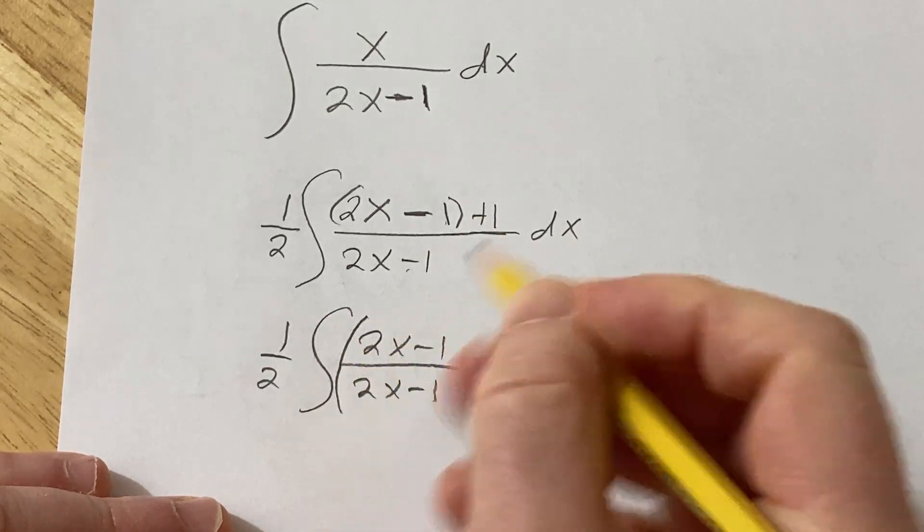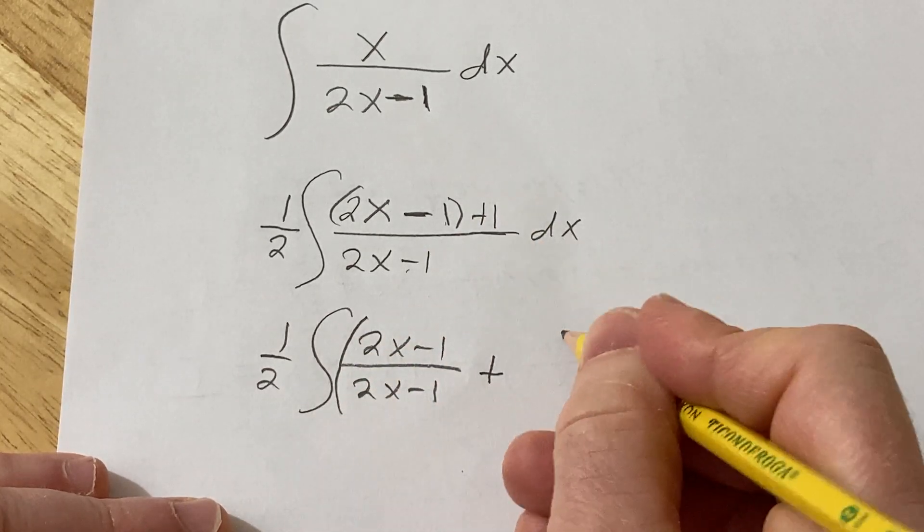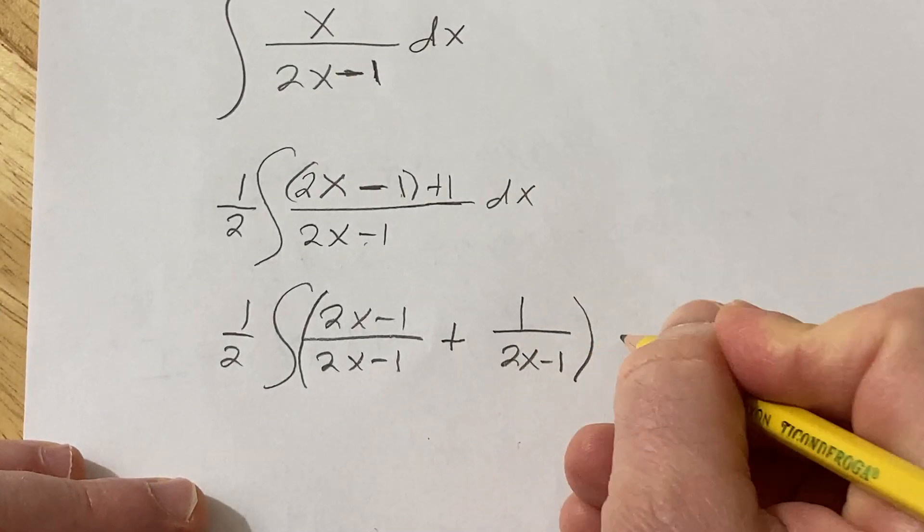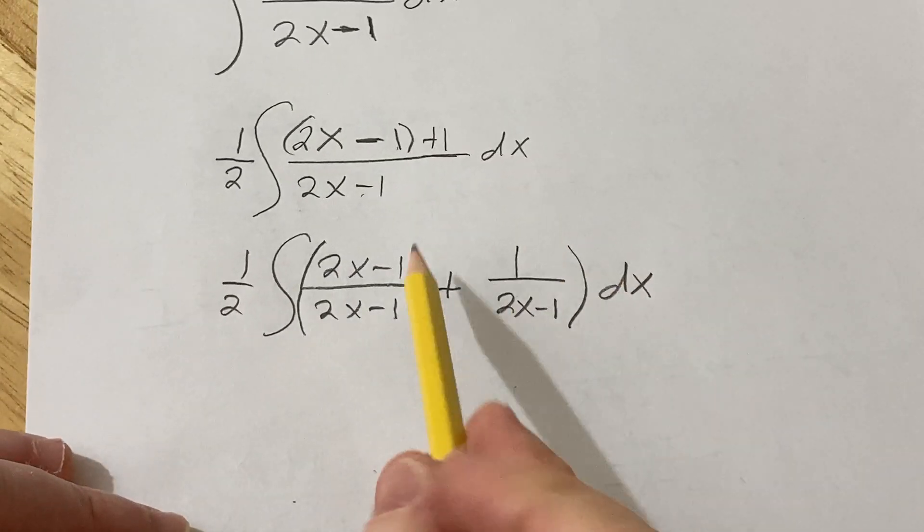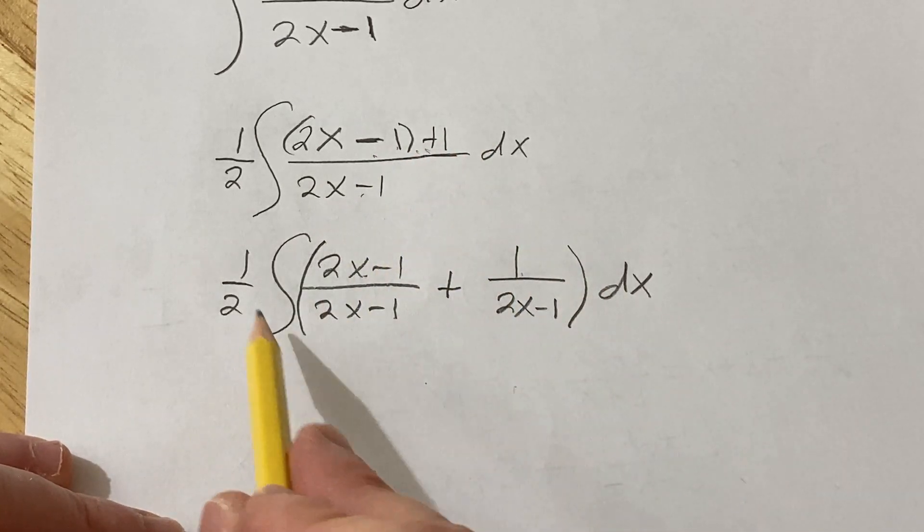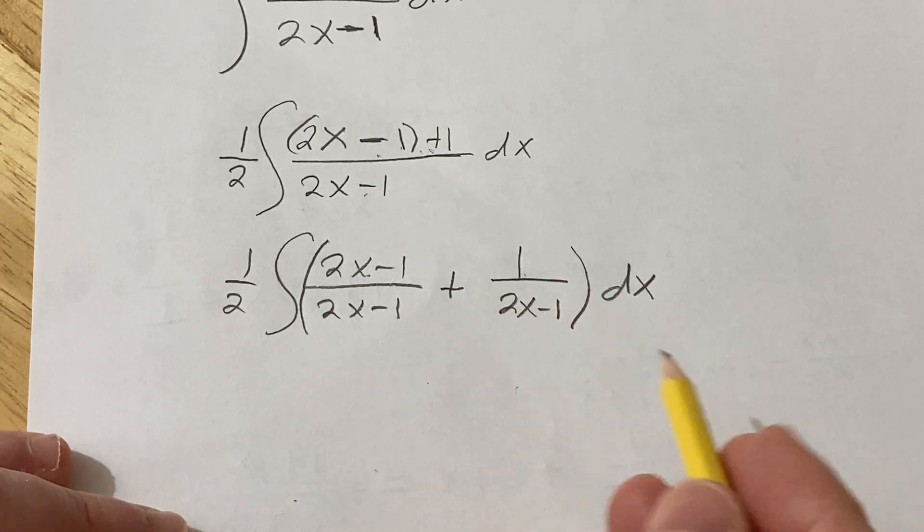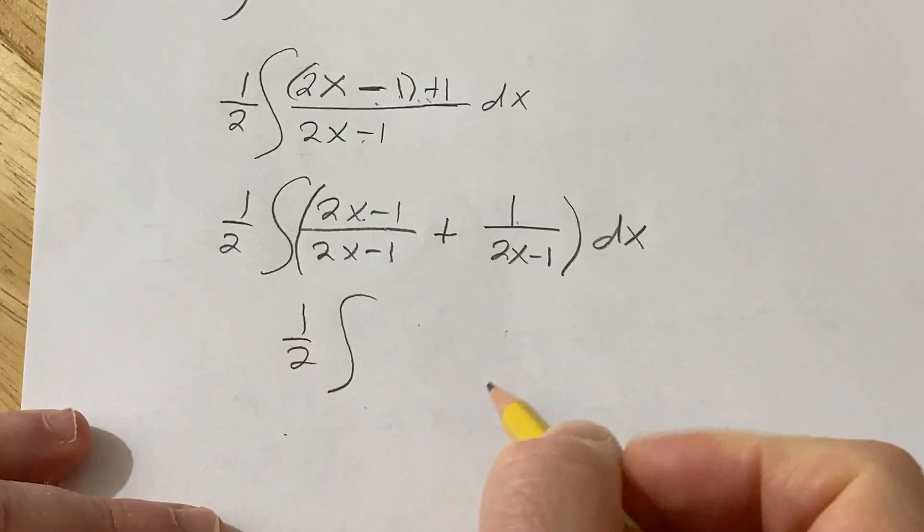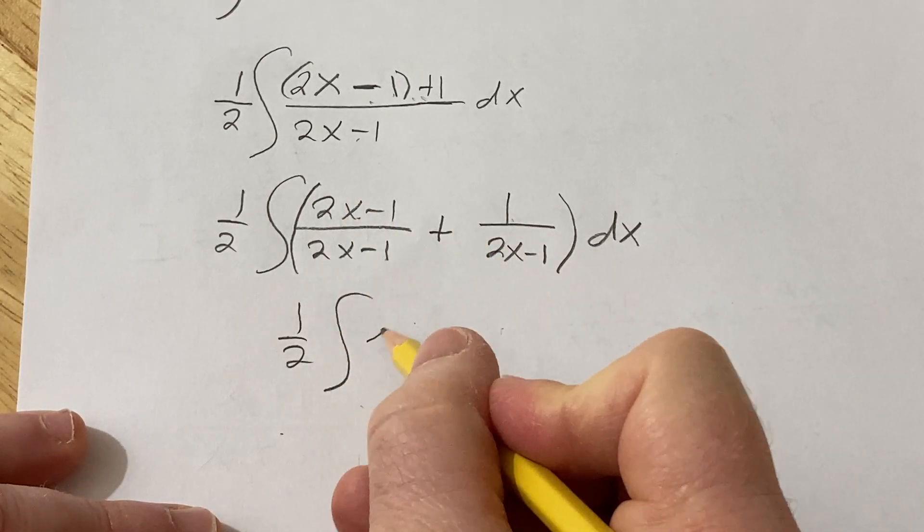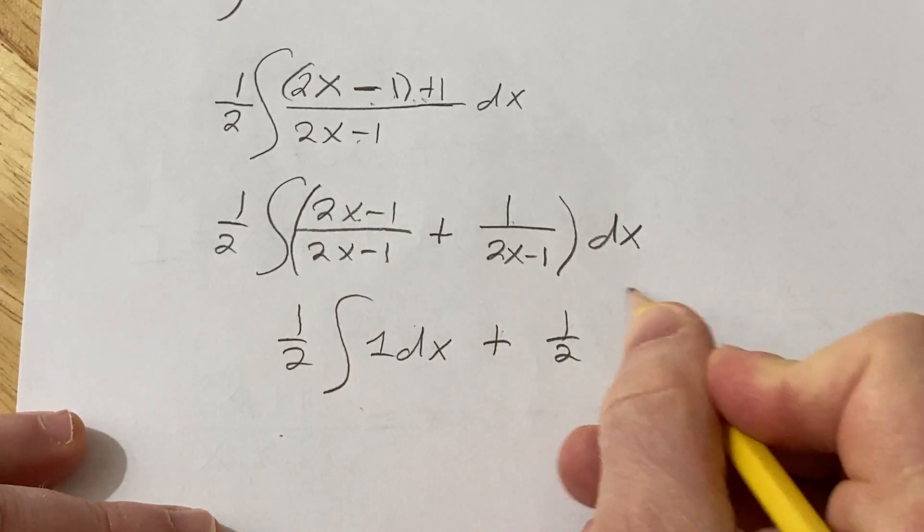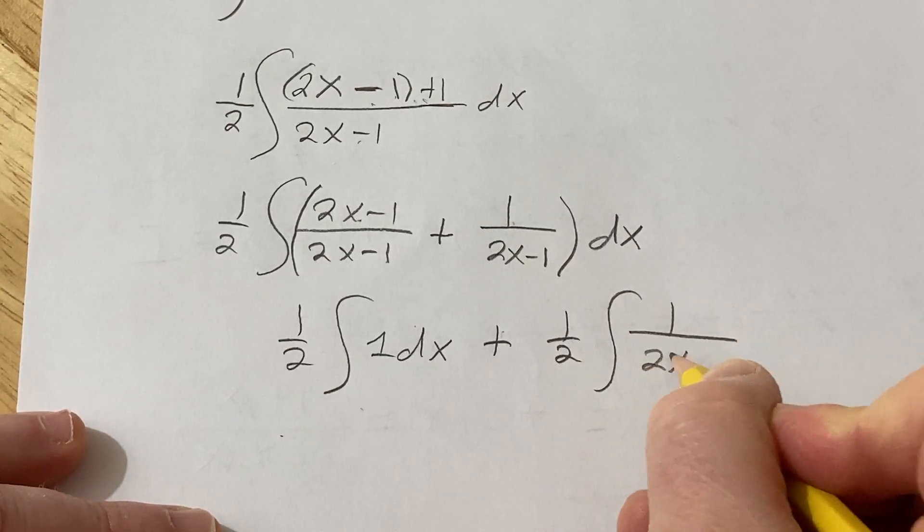And I'll put a plus 1 over 2x minus 1 dx. You see how we did that? So basically it's this over this, plus, and then this over this. And now I'm just going to go ahead and break it up into two actual integrals. So this is 1 half and then integral. This cancels. It's just 1 dx plus 1 half integral 1 over 2x minus 1 dx.